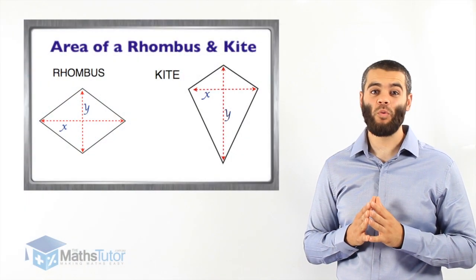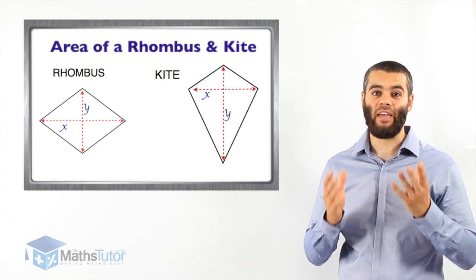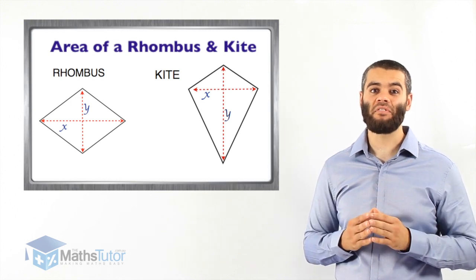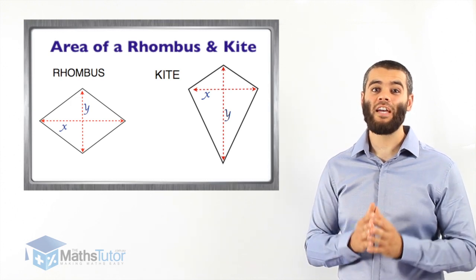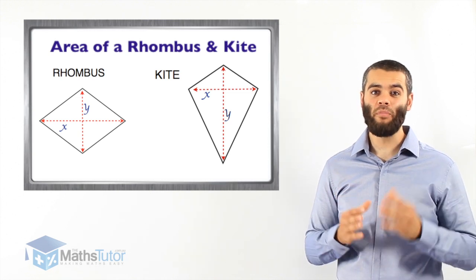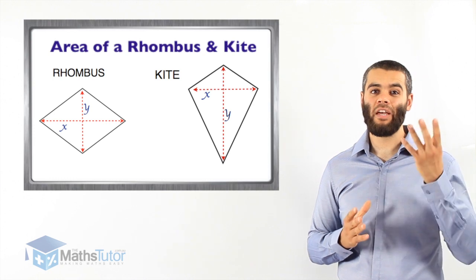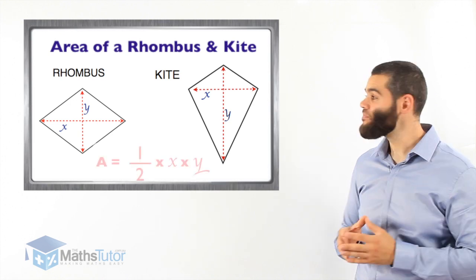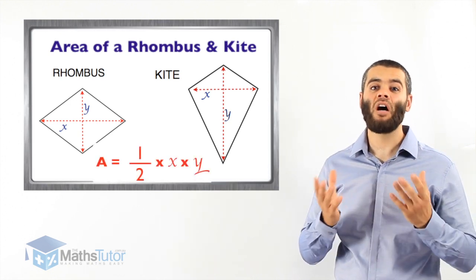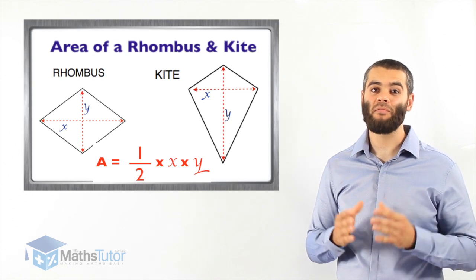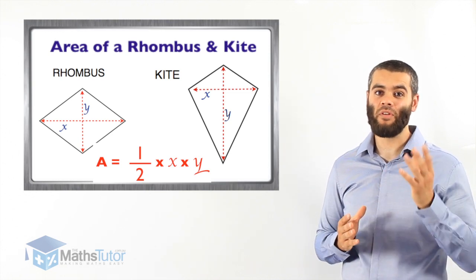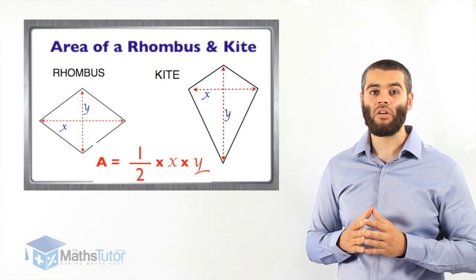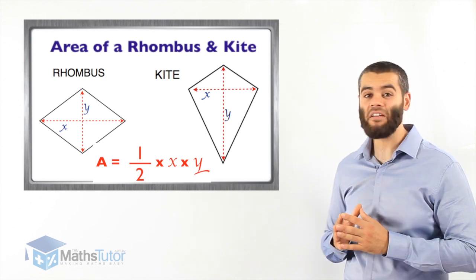Now we're going to work out the area of a kite and the area of a rhombus. The kite and rhombus are different shapes; however, they share the same formula. The formula for a rhombus and the formula for a kite are the same: half times x times y. Whenever you think of a kite and a rhombus, remember that formula — the area is half times x times y.